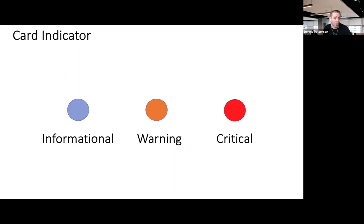For the card indicator, there are three possible values defined by the specification: informational, warning, or critical. This gives the CDS client information about the nature of the guidance to influence how it's shown to the user — for example, color coding, or displaying a critical card as a modal pop-up that interrupts the user's workflow, versus showing an informational card more passively.